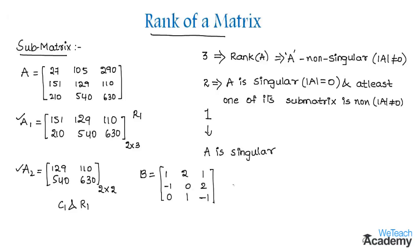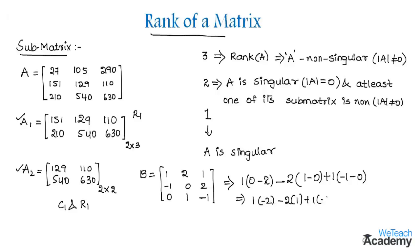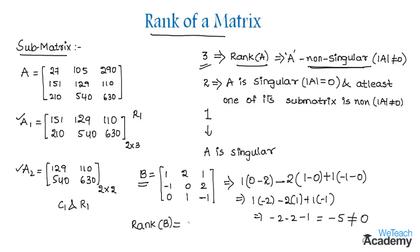For instance, let us consider matrix B and find its determinant. The determinant of the 3 by 3 matrix is the first element into the determinant of its 2 by 2 sub-matrix, which gives 0 minus 2, minus the second element 2 into the determinant of its 2 by 2 matrix which is minus 1 into 1. This implies we get 1 into (minus 2) minus 2 into 1 plus 1 into (minus 1), giving minus 2 minus 2 minus 1, which equals minus 5. Since minus 5 is not equal to 0, matrix B is non-singular, so the rank of matrix B equals 3.